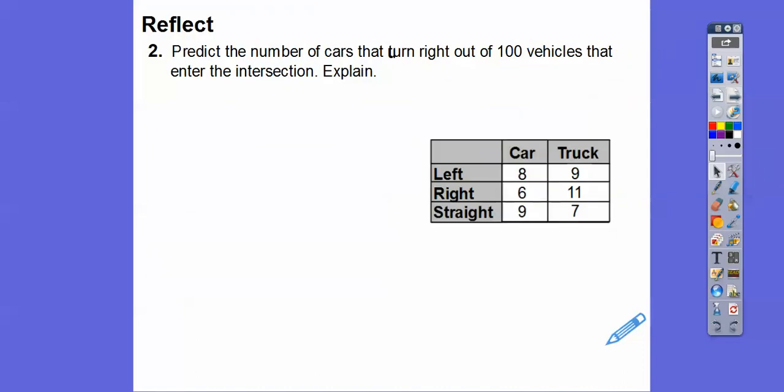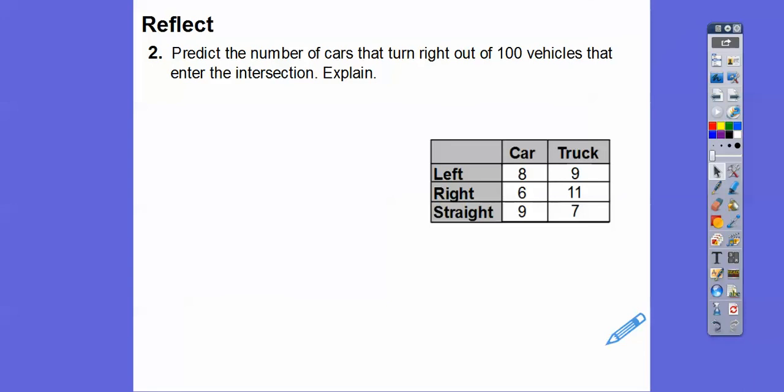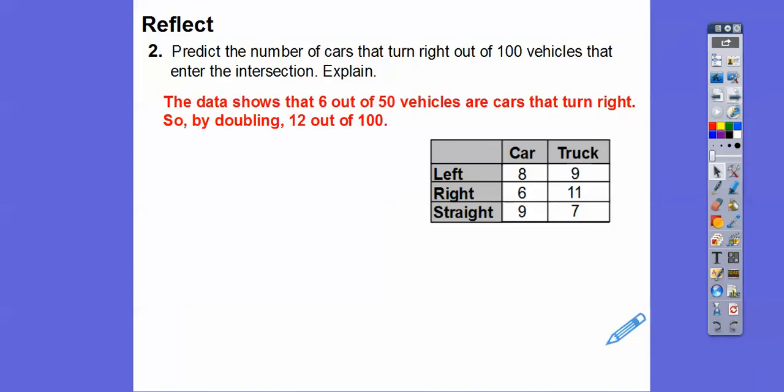Predict the number of cars that will turn right out of 100 vehicles that enter the intersection. Those guys that are going to turn right, since the data shows that 6 out of 50 vehicles are going to be cars that turn right, well, if we want to know out of 100, we just double that, so 50 times 2 is 100, so 6 times 2 is going to be 12, so we're going to get 12 out of 100. Would it be 12? Probably not, but that would be a good educated guesstimation on that.